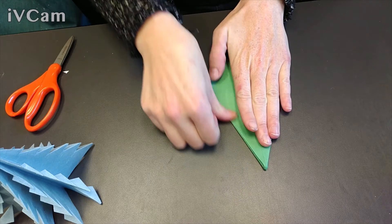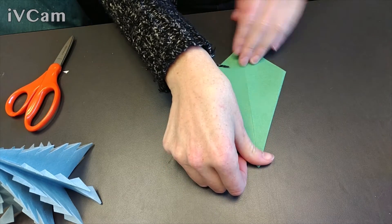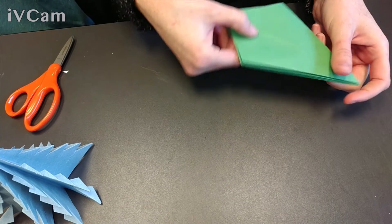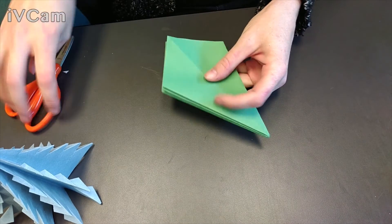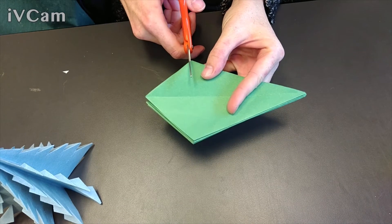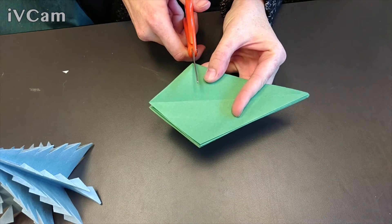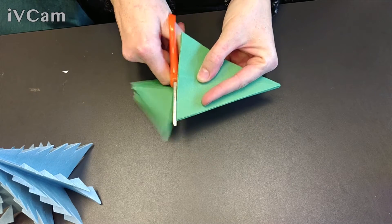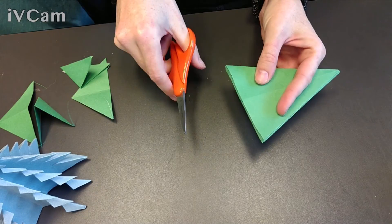So now we've got a triangle with a pointy bottom. So what we're going to do, starting out the scissors, we are going to cut off the bottom. Make sure that bottom is open. Because if it is closed, you need to start over. Because the top of your tree needs to be closed.